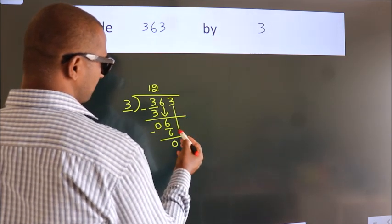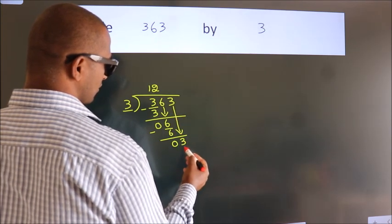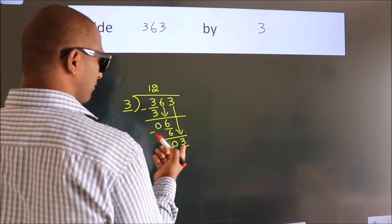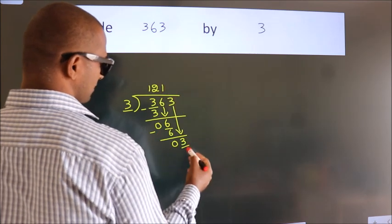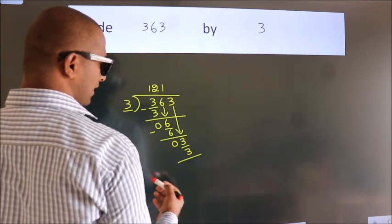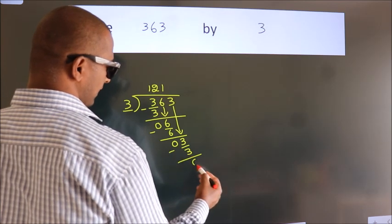After this, bring down the beside number. So 3 down. When do we get 3 in the 3 table? 3 ones is 3. Now we subtract. We get 0.